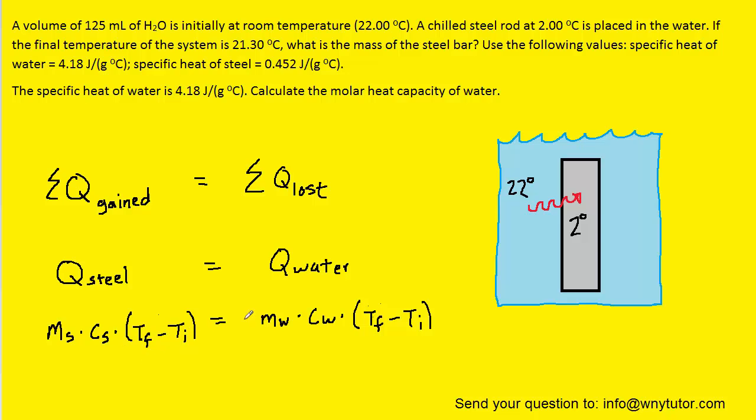As we will see, we know every single term in the equation except for the mass of the steel bar, which is exactly what we're looking for in the first question. So what we'll do is go ahead and plug in the specific heat of steel, the final and initial temperature of the steel, the mass of water, specific heat of water, and then the final and initial temperature of water.